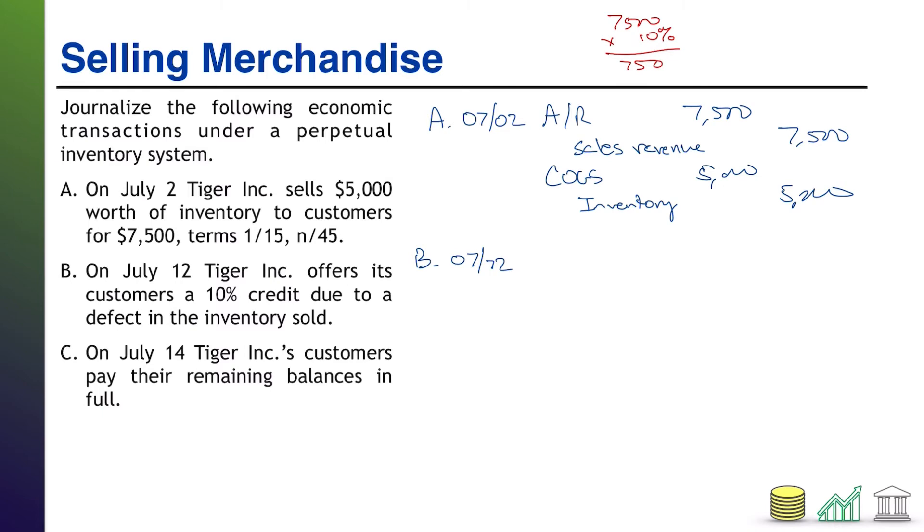So, we're going to give them a $750 discount. Now, what is that that we're discounting? Well, we're discounting what they owe us. So, instead of owing us $7,500, we are now going to mark down that receivable by our 10%, by our $750.